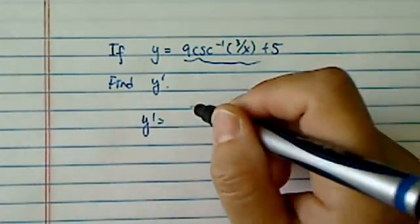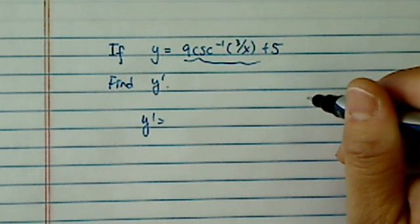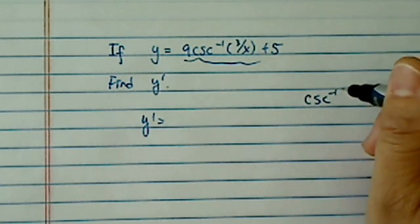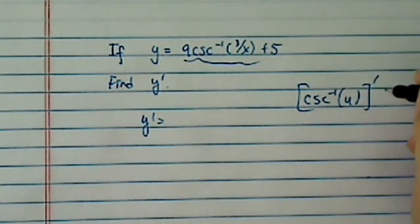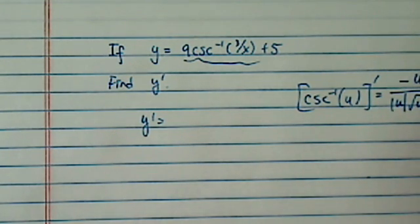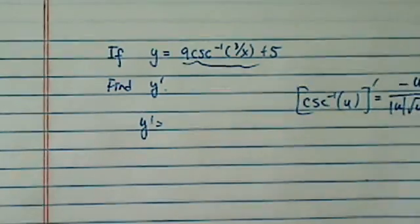y' is equal to, according to a formula, let's take csc inverse of u. The derivative of this is equal to minus u prime divided by u, and then that's u squared minus 1.